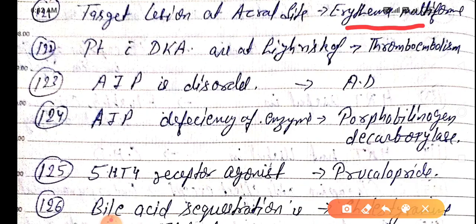Patients with DKA — diabetic ketoacidosis — are at high risk of thromboembolism. So in DKA, firstly we have to give subcutaneous heparin to prevent the risk of thromboembolism.